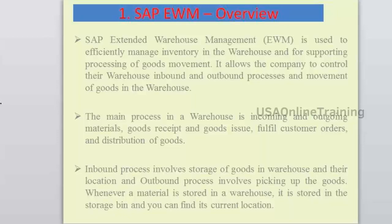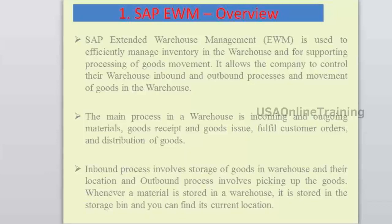The main inbound process involves storage of goods in the warehouse and tracking their location. The outbound process involves picking up goods. Whenever a material is stored in the warehouse it is stored in a storage bin, and you can find its current location. Inbound and outbound processes are very important in any warehouse.